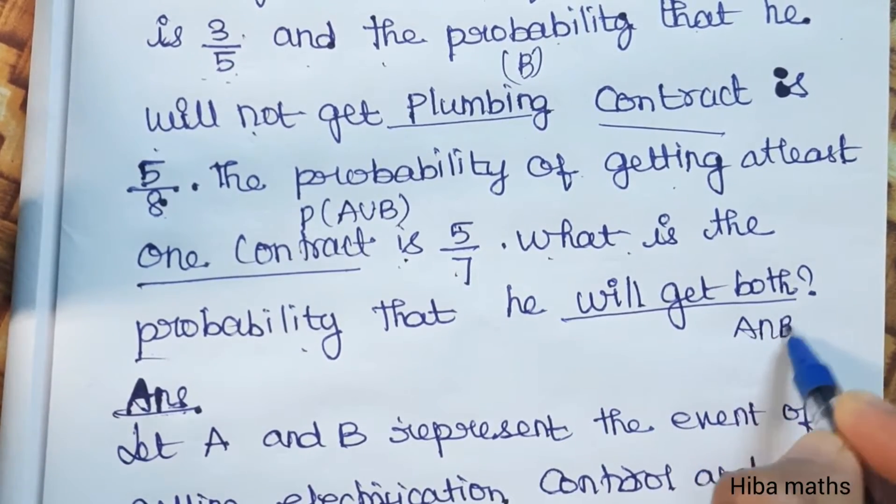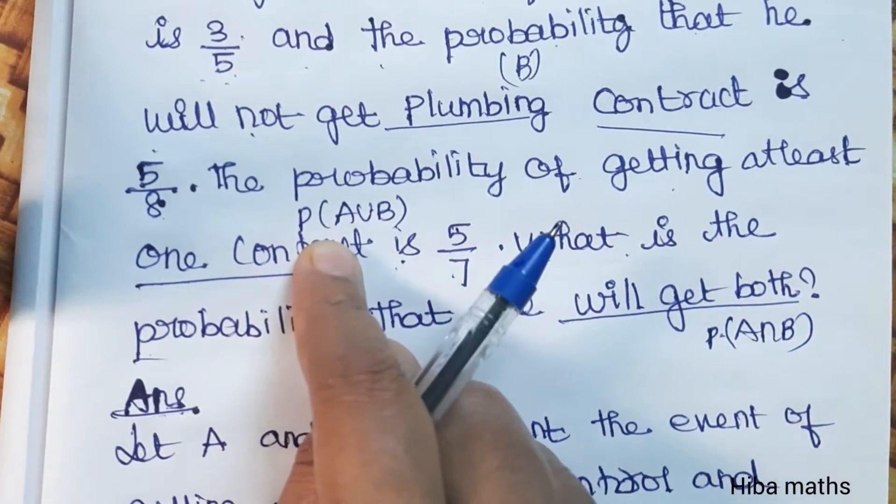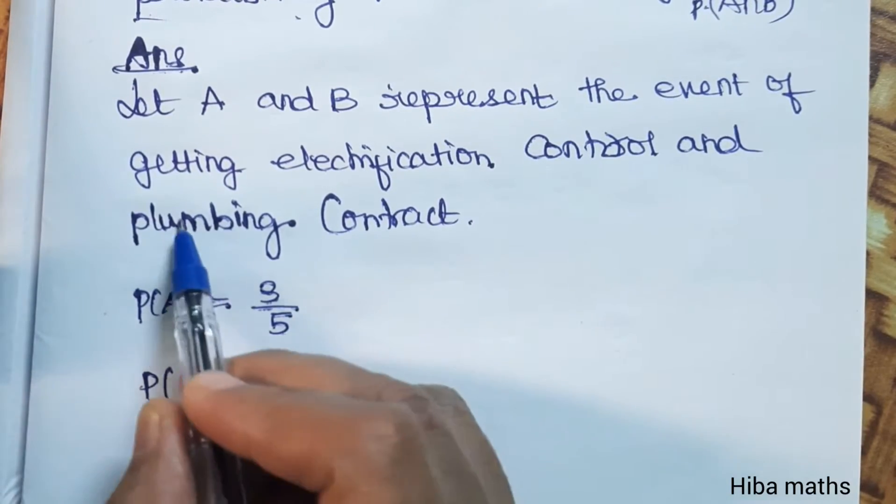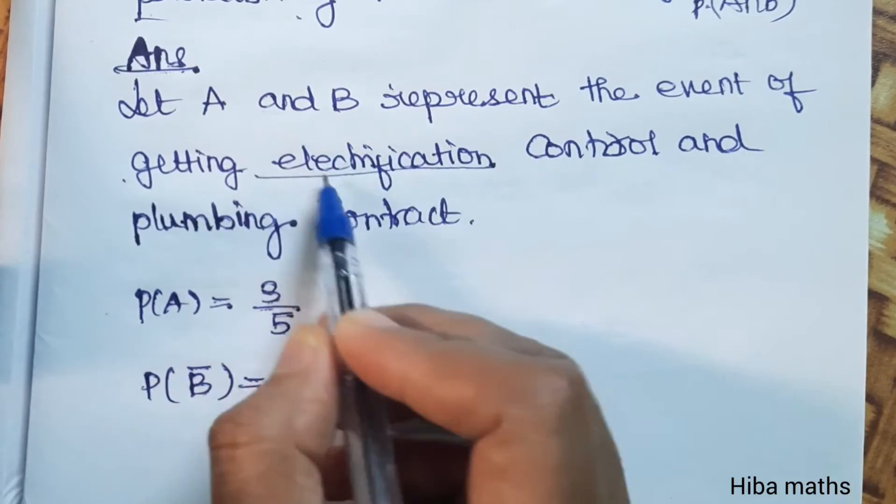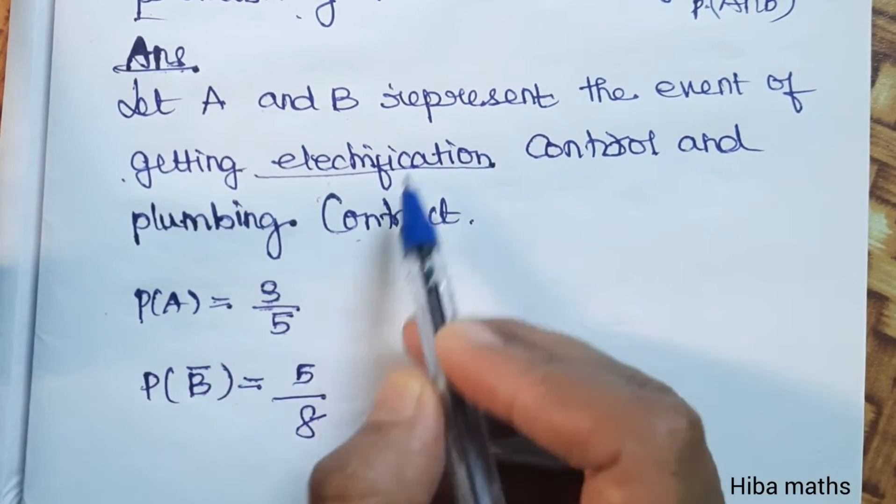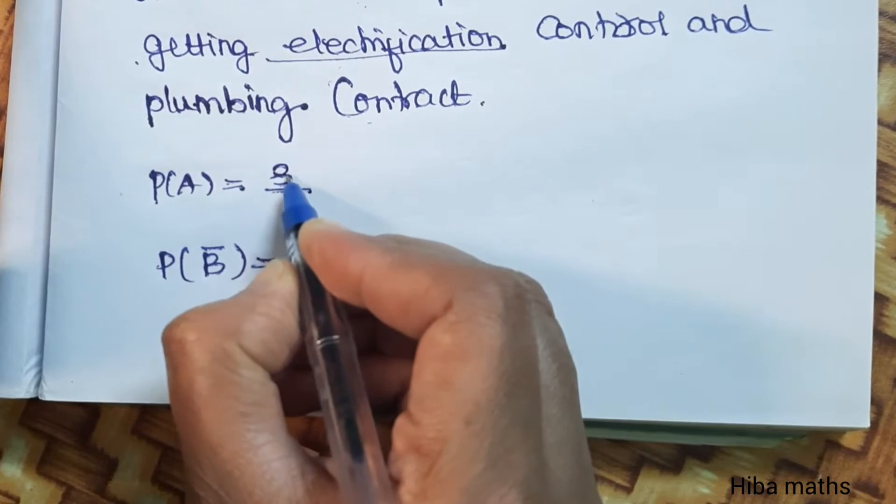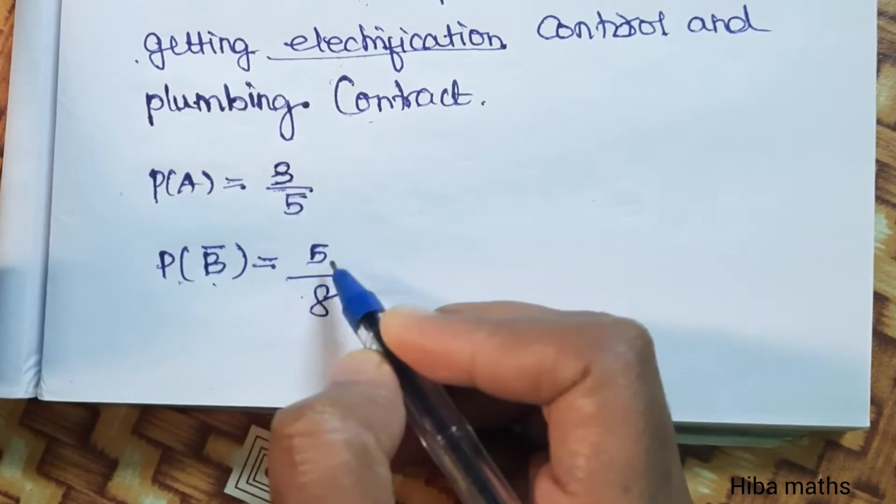A intersection B - both contracts. If it's intersection, not union. Let A and B represent the event of getting electrification and plumbing contract. So P of A is 3 by 5. P of B bar is what value? 5 by 8.